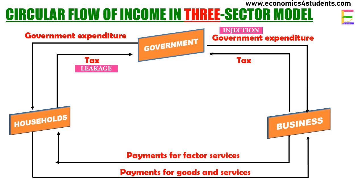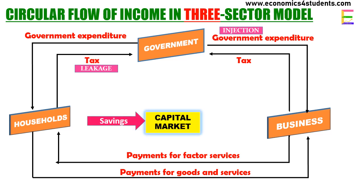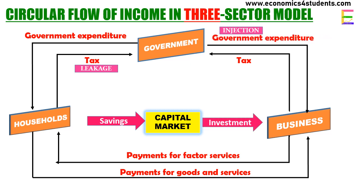Tax constitutes a leakage from the flow of income, while government expenditure is an injection. In the three-sector model, there are two leakages — taxes going to the government and savings going to the capital market — and two injections: government expenditure and investment.